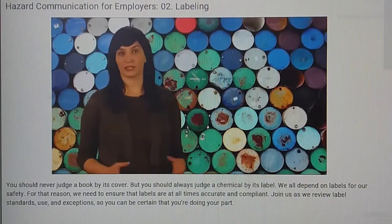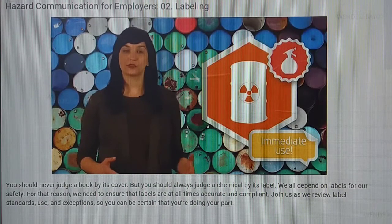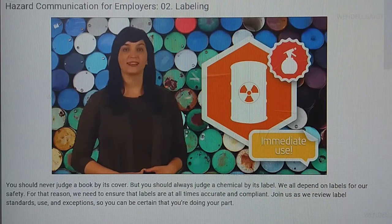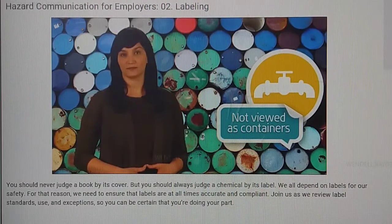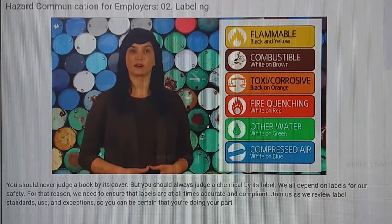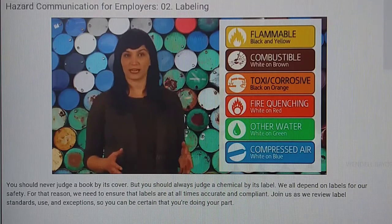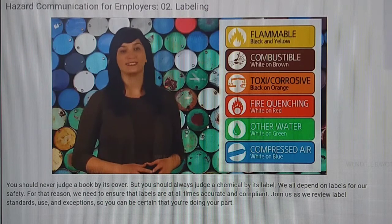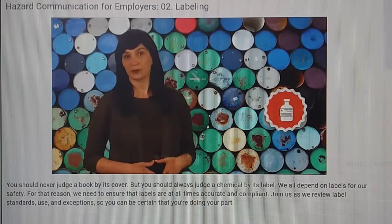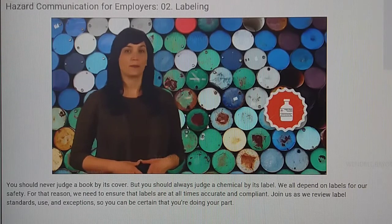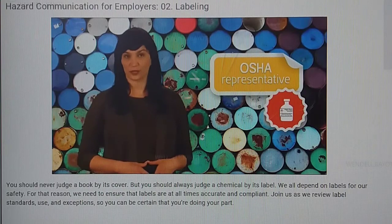There are a couple of notable exceptions to labeling requirements. First, regarding portable containers — if a chemical is transferred to a portable container, it should be used immediately. Second, there are some labeling exceptions regarding pipes in a facility. Under the standard, pipes or piping systems are not viewed as containers. Some employers use color coding to indicate which chemicals are in particular pipes to enhance workplace safety. Just be sure to train employees regarding pipe safety and any protective measures needed when working around or with the pipes. Additionally, if chemicals are packaged in containers that are too small for the required label, use is typically approved by OSHA on a case-by-case basis — reach out to your OSHA representative for guidance on proper labeling of these small containers.